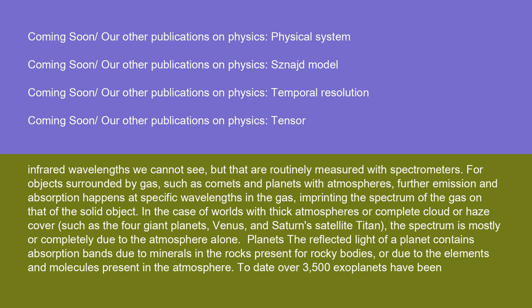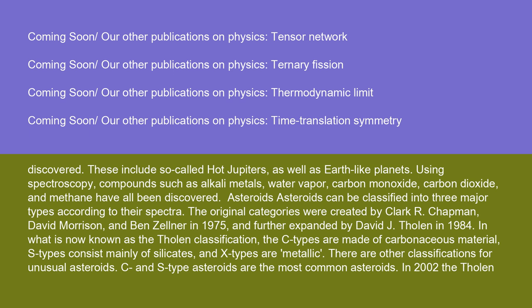The reflected light of a planet contains absorption bands due to minerals in the rocks present for rocky bodies, or due to the elements and molecules present in the atmosphere. To date, over 3,500 exoplanets have been discovered, including so-called hot Jupiters as well as Earth-like planets. Using spectroscopy, compounds such as alkaline metals, water vapor, carbon monoxide, carbon dioxide, and methane have all been discovered.